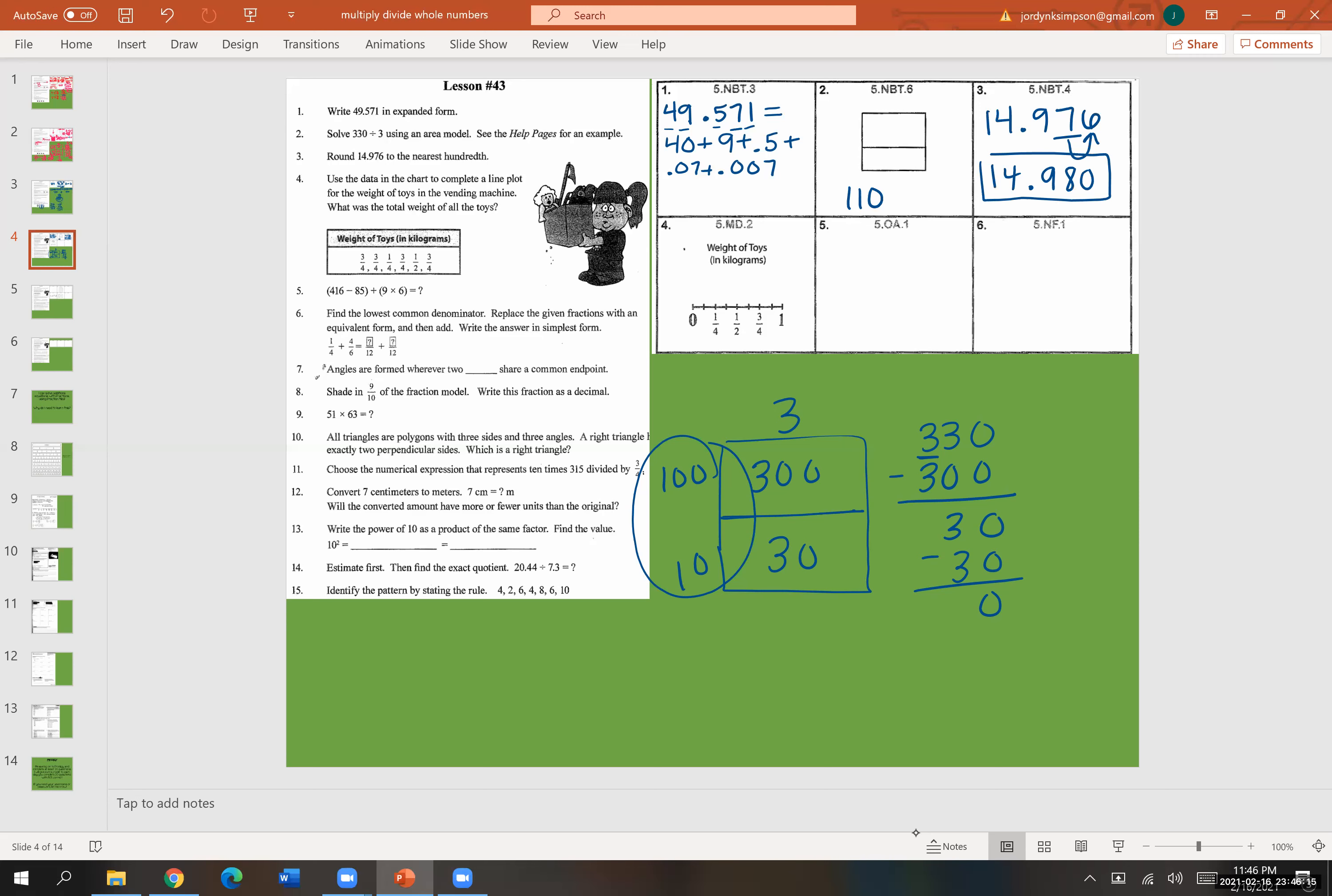Number four, use the data in the chart to complete a line plot for the weight of toys in the vending machine. What was the total weight of all of the toys? So three-fourths is the first one, so we'll put an X. Then we have another three-fourths. So that will go on top. We have a one-fourth, another three-fourths, a one-half, and another three-fourths.